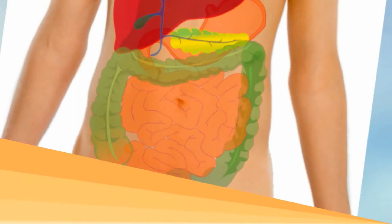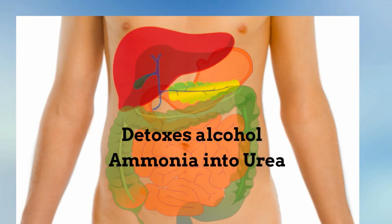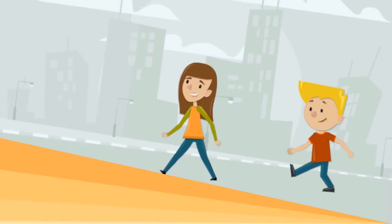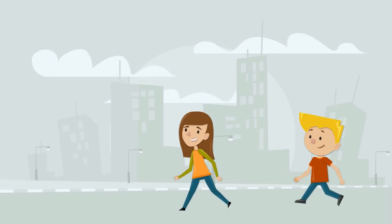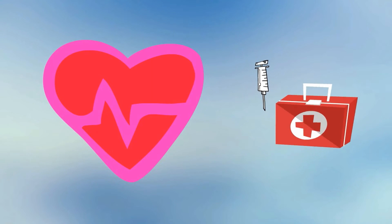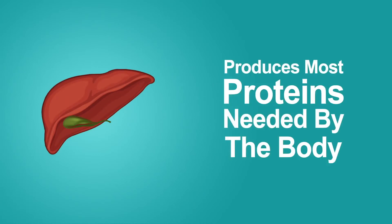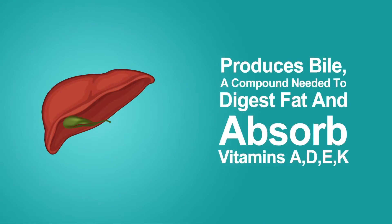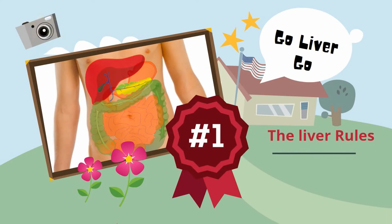The liver also helps to detoxify. For example, it detoxes alcohol and converts ammonia into the less toxic urea. During exercise, the liver breaks down glucose that it stores as glycogen, which can be used as energy. It stores vitamin B12, iron, and copper. It produces blood clotting proteins and many hormones. It also helps the immune system. Your liver is a superstar organ and works hard to keep us alive.